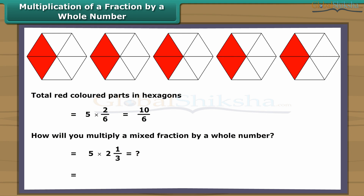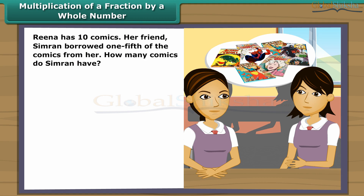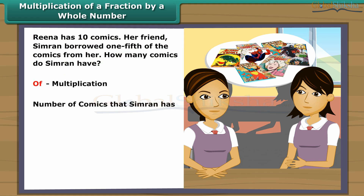In such cases, we first convert the mixed fraction to an improper fraction and then carry out the multiplication. Reena has ten comics. Her friend Simran borrowed one-fifth of the comics from her. How many comics does Simran have? Remember, 'of' means multiplication. Thus, Simran has one-fifth of ten comics, which means one-fifth multiplied by ten, which equals two. So Simran has two comics.